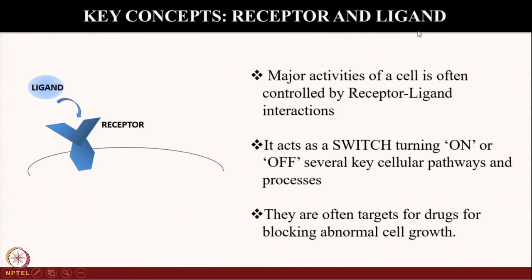Moving on, let us learn about receptor and ligand. Major activities of a cell are often controlled by receptor-ligand interactions. It acts as a switch, turning on or off several key cellular pathways and processes. As you can see in this small cartoon, this is a ligand, and when it binds to a receptor, many cellular processes get started.